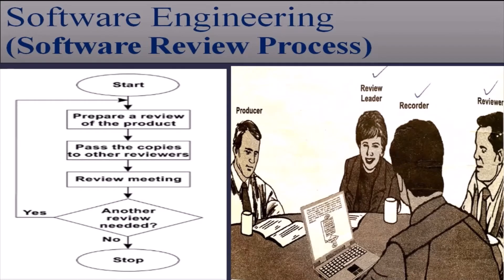The review process is shown in the figure. First, the preparation of the review of the product is done, and then the product which is to be reviewed is considered and copies of that product are passed to all the team members. After that, a review meeting is conducted. During the review meeting, the decision regarding the next review is taken, and if more reviews are required, the date of the next review is decided in the meeting.